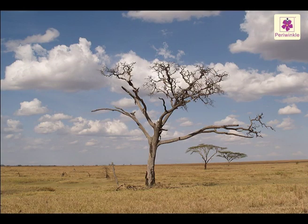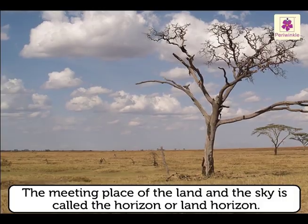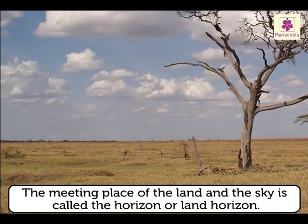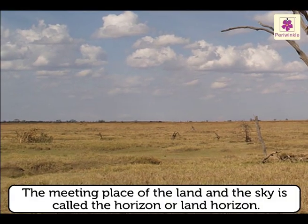Land and sky do not meet. They only seem to meet. This meeting place of the land and the sky is called the horizon or land horizon.